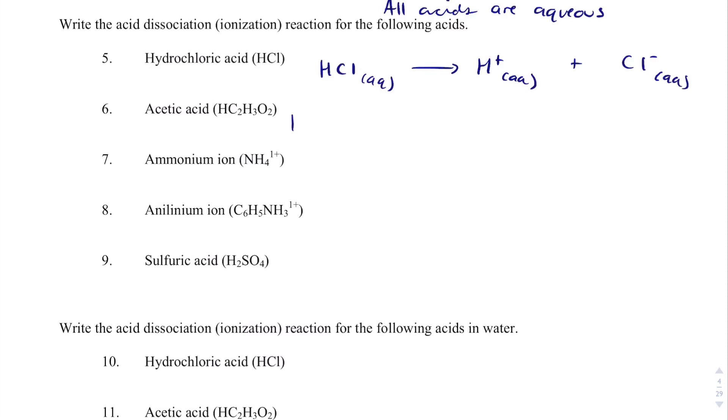Acetic acid, and you may wonder why it's written HC2H3O2, is that it can really only lose one H at a time. These three H's actually will never be lost, and we'll get into that later. But, we get H+ plus C2H3O2-1.